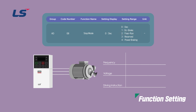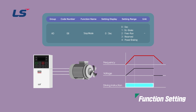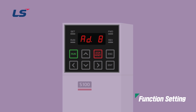The free run stop method is a function that cuts off the AC drive output when the operation command is turned off. Even if the AC drive output is cut off, the motor may rotate under the inertia of the load for a long time if the motor has large inertia and is running at high speed. Free run stop creates the same effect as a facility running on direct input. To set it using the keypad, at AD8 stop mode, press enter to bring up the stop method screen. Use the arrow keys to move the cursor to free run number 2 and press enter to finish setting the free run function.